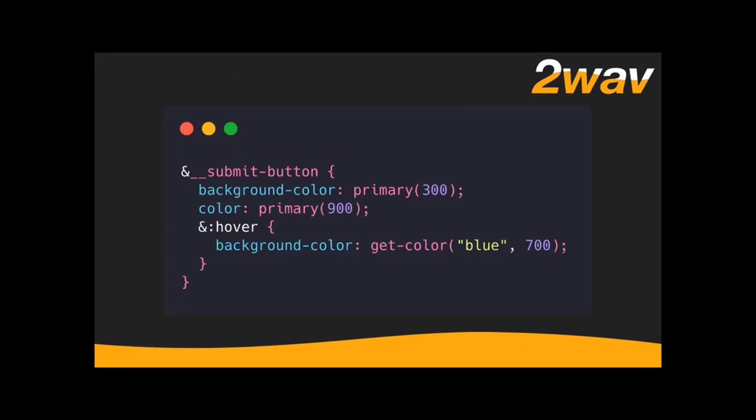The last element I want to talk about in implementation is actually something that designers forget a lot, and that's interaction — how the page behaves when your user does stuff to it. There is a deep rabbit hole around animations, but the really low-hanging fruit is your hover states. Users have been taught that if something animates when they mouse over it, they can do something to it. So if you have elements you can interact with, they should have some sort of interaction.